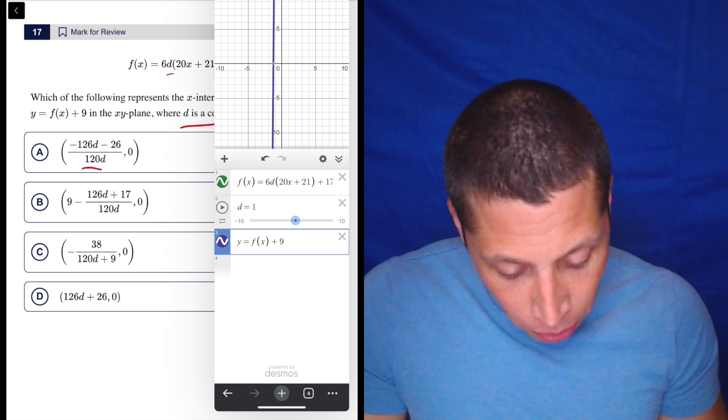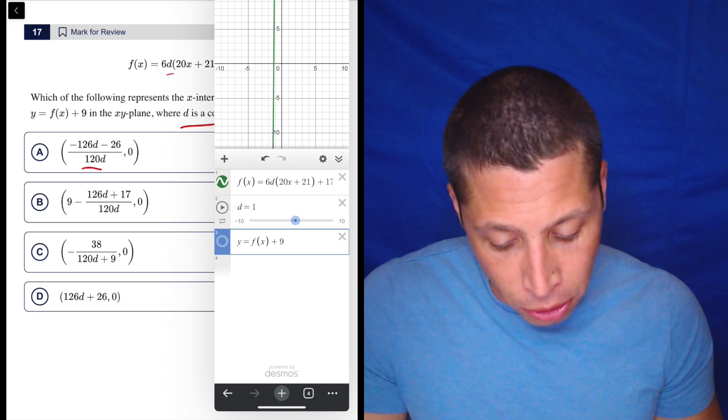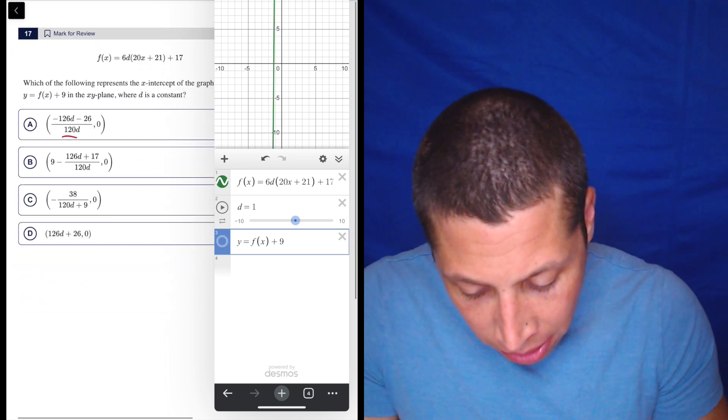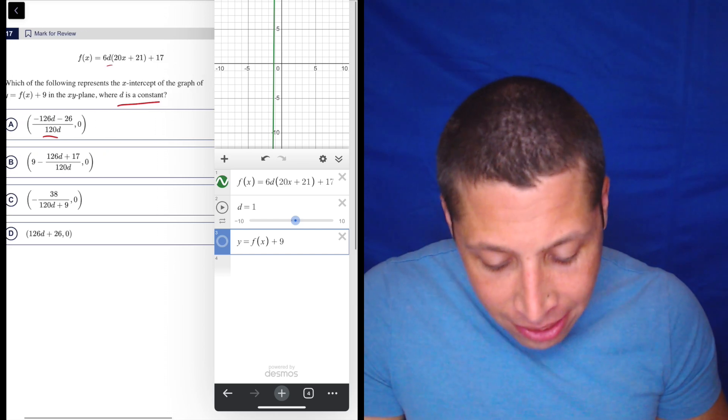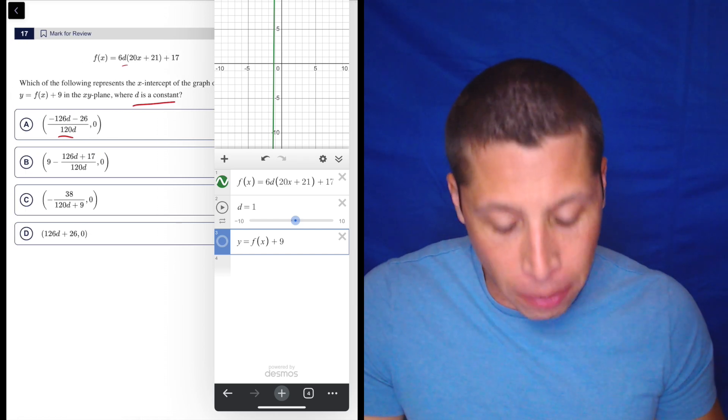So what does this get me? We have two equations. We have the original one. This is my F of X, so I can turn them on and off. It's the green. But what do they want from us? Which of the following represents the X intercept of the graph of Y equals F of X plus nine in the XY plane where D is a constant?